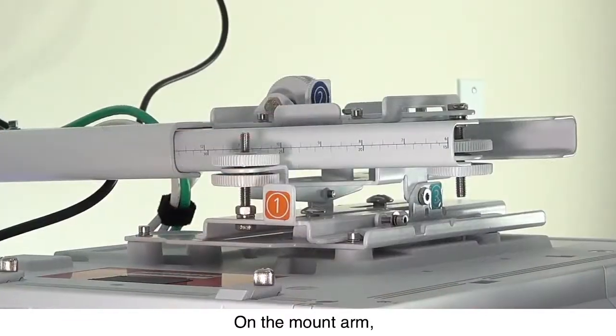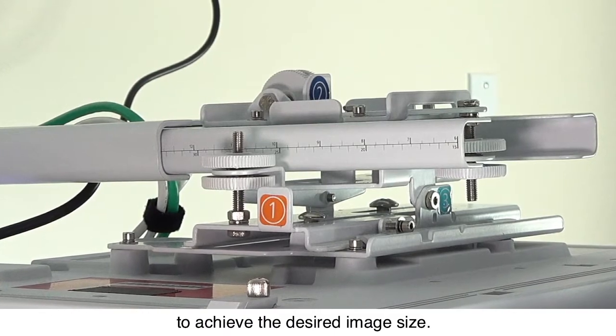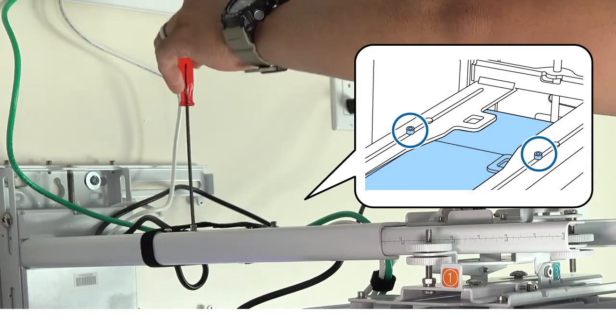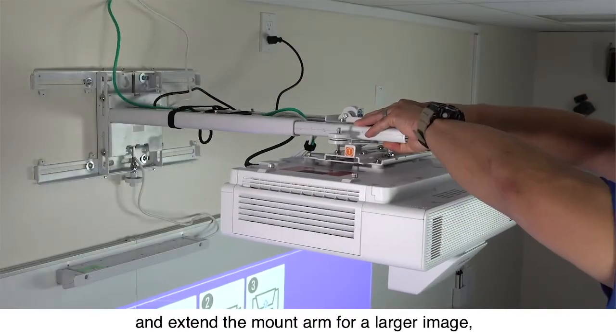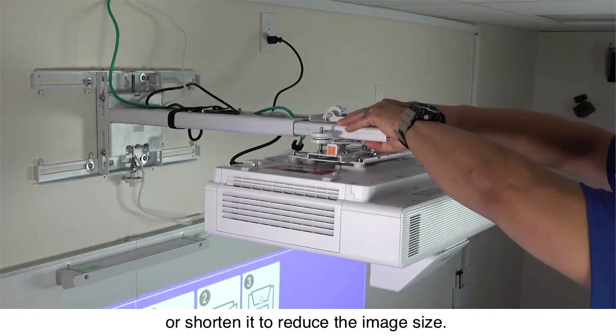On the mount arm, there are markings you can use to set the length of the arm to achieve the desired image size. Loosen these screws and extend the mount arm for a larger image or shorten it to reduce the image size.